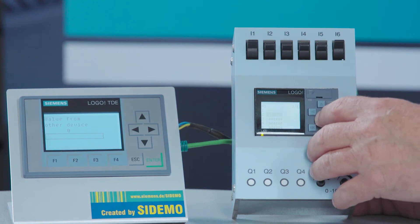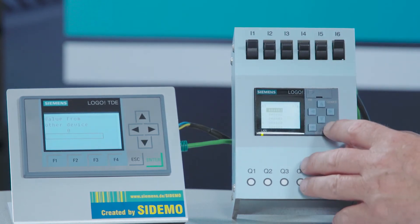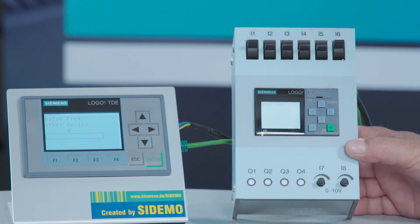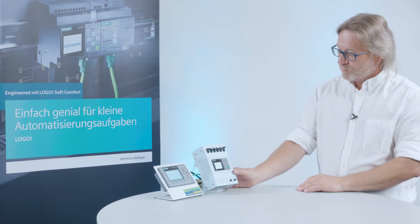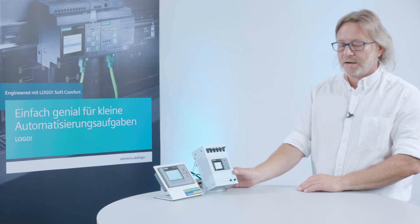I can now select the relevant inputs using the arrow up and arrow down buttons and confirm my selection with OK. Now the selected channel is shown as a trend view on the display.